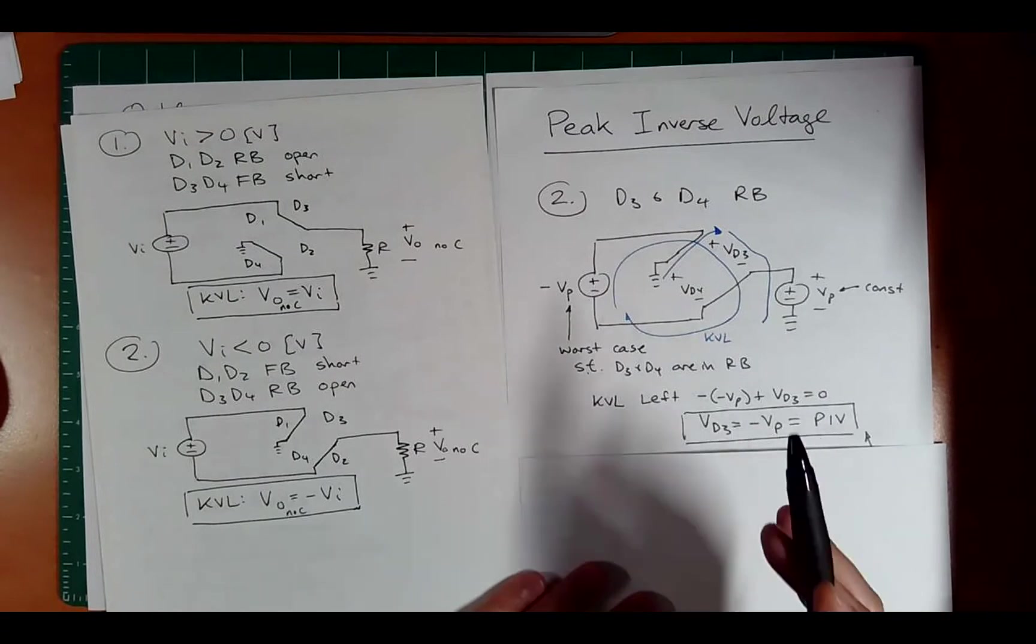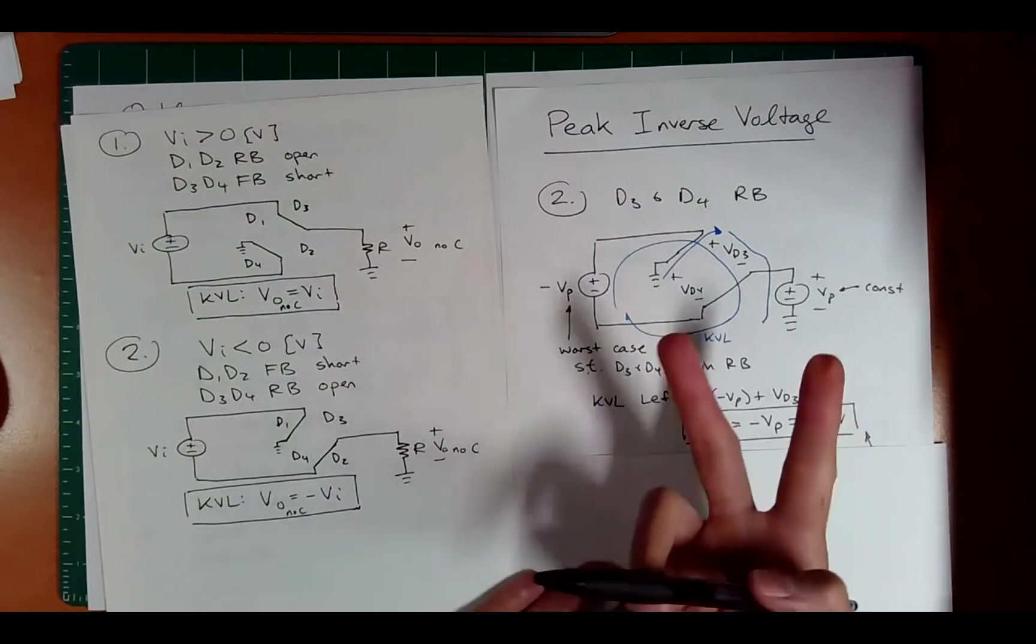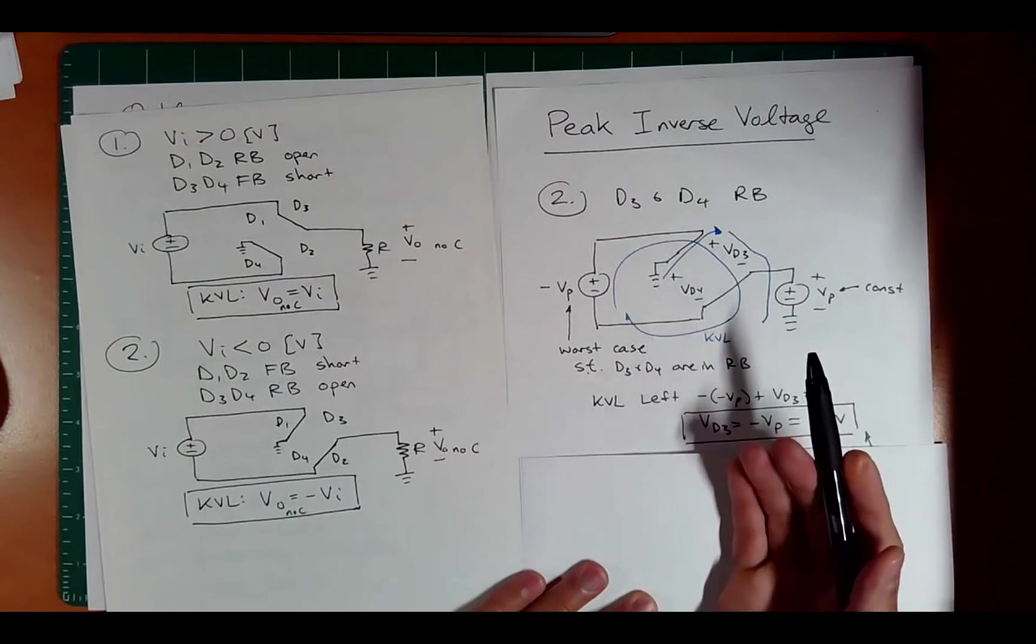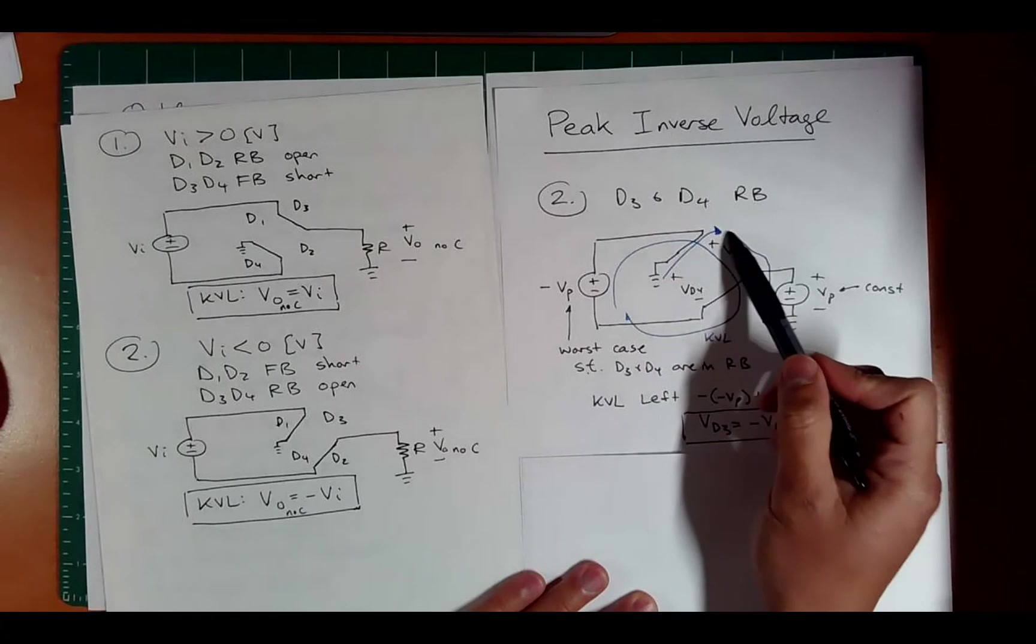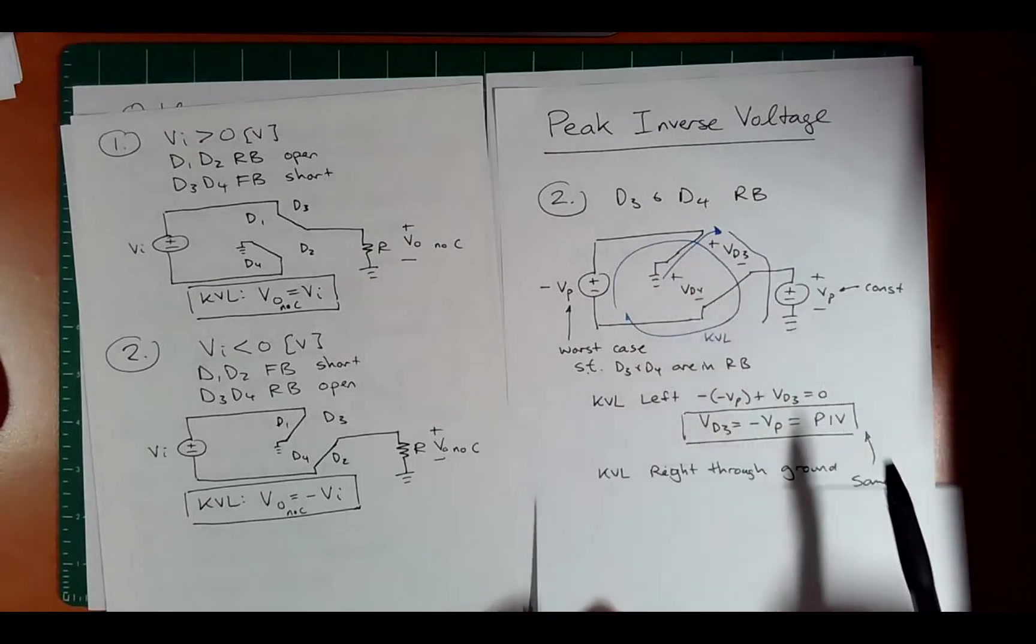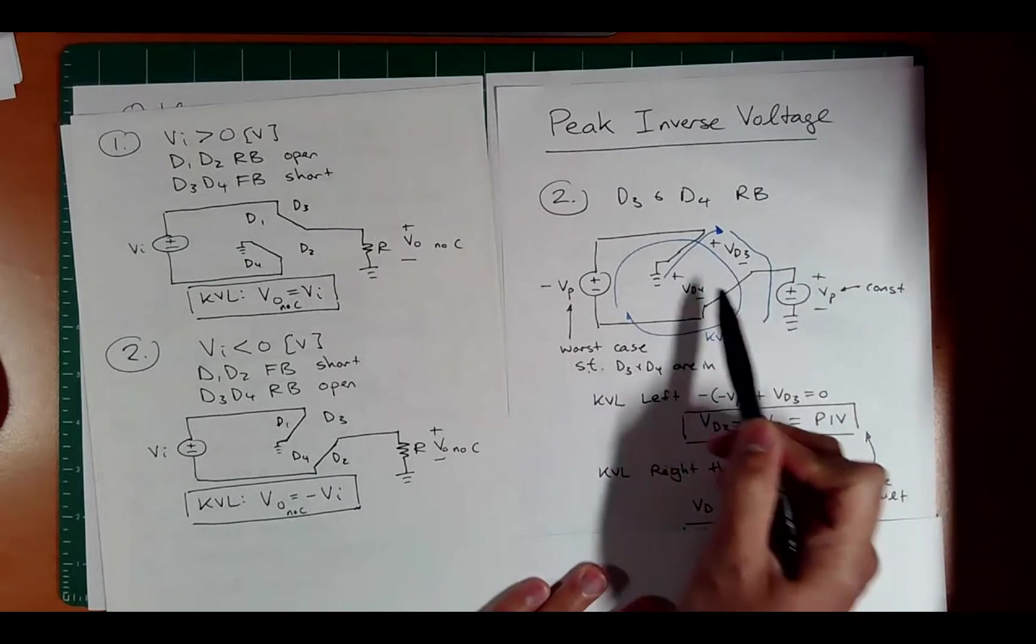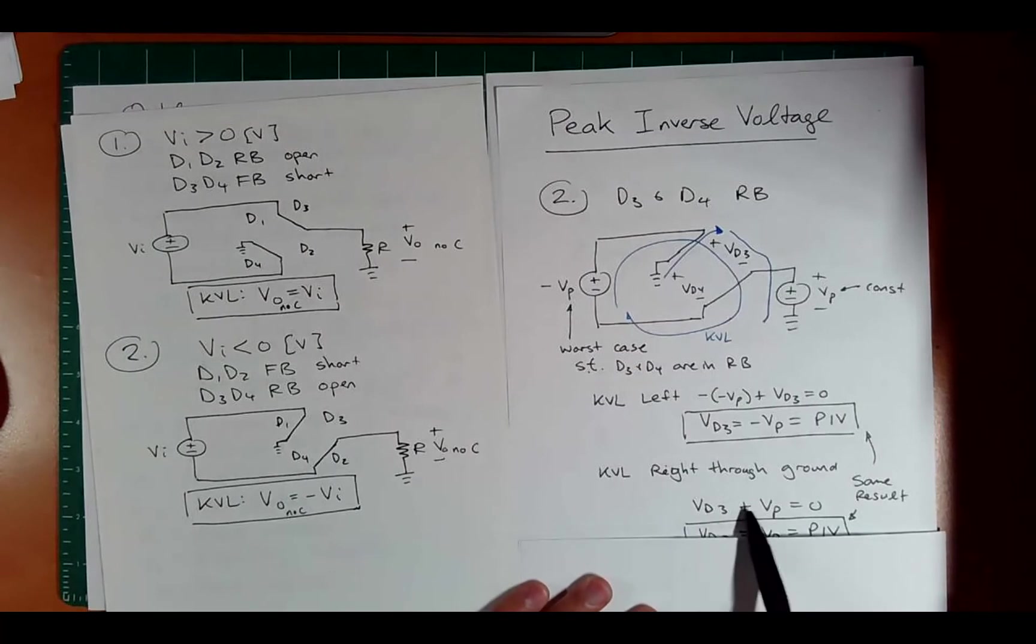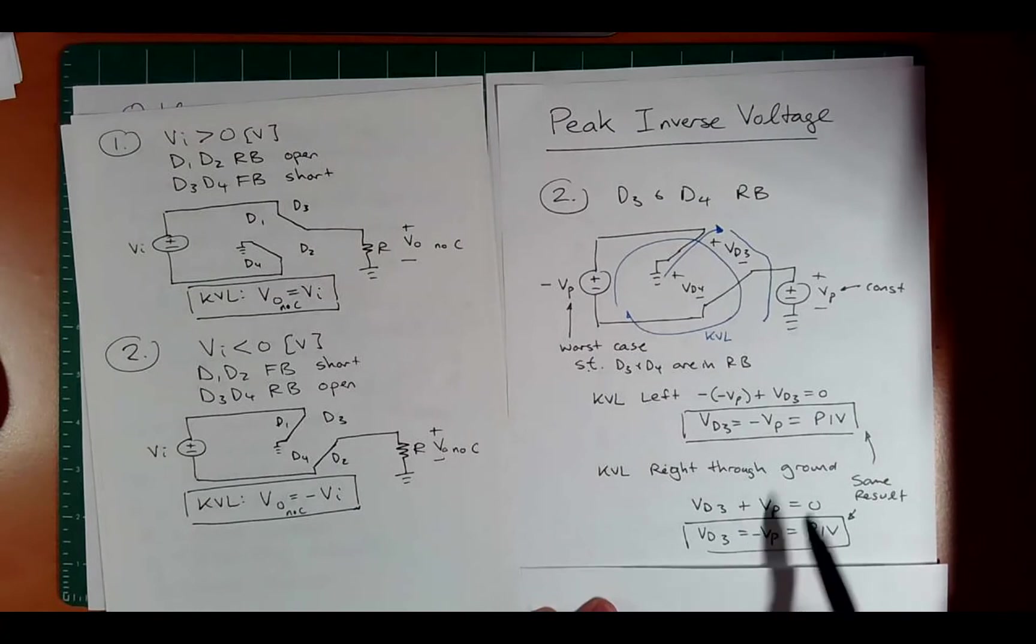Remember, in the half wave rectifier, it ended up being twice. So the diodes actually don't have to do as much work. So there's some advantages of doing this full bridge rectifier. Could we get the same result by doing a KVL around this other loop, by the way? So positive Vd3 plus Vp, and we're back to the ground. Yep, we've completed the circuit. So Vd3 plus Vp equals zero. We get the same result. The peak inverse voltage is negative Vp.